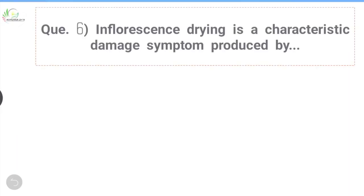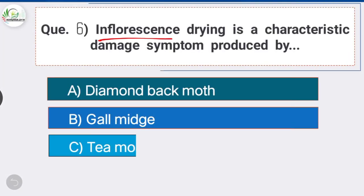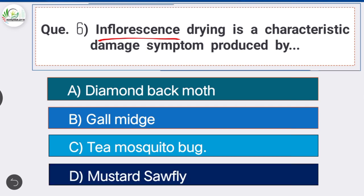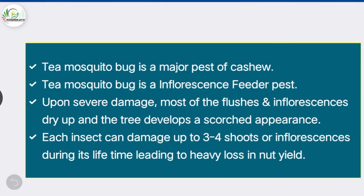Question 6: Inflorescence drying is a characteristic damage symptom produced by which pest? Option C is the correct answer: tea mosquito bug. Tea mosquito bug is a major pest of cashew, causing very high damage during flushing, flowering, and fruiting periods. Upon severe damage, most flushes and inflorescences dry up and the tree develops a scorched appearance. Each insect can damage up to three to four shoots during its lifetime.